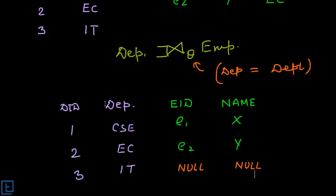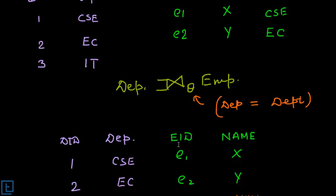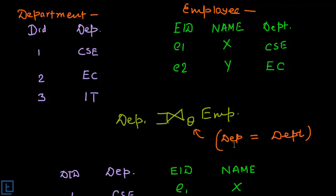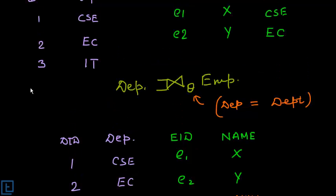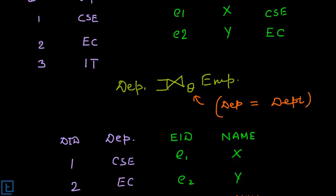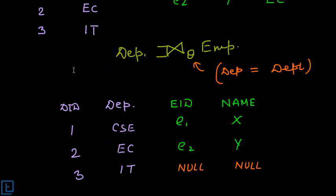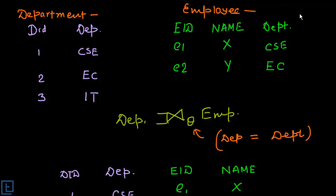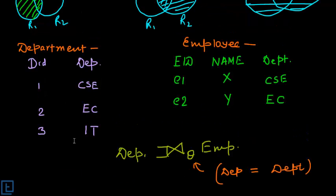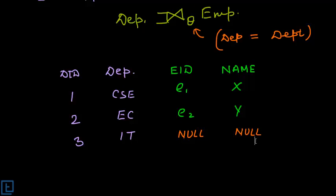When we perform this join operation, the resultant will have four attributes: department ID, department name, employee ID, and employee name. The department attribute from the employee table is not written again because our joining condition already equates the two department columns, so we don't write it twice. All tuples from the department table appear in the result, but since there is no employee from the IT department, the corresponding entry for EID and name will be null.